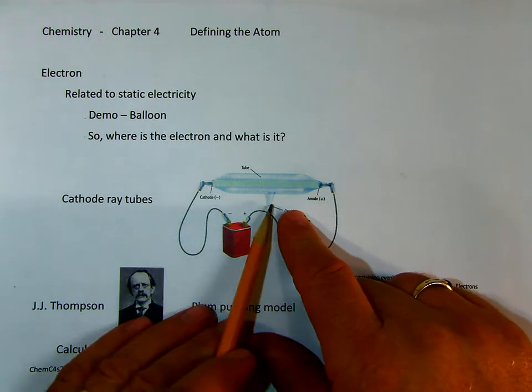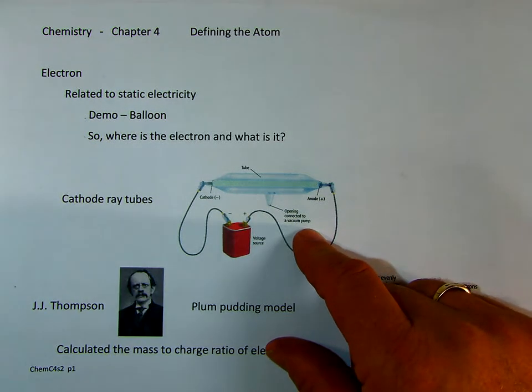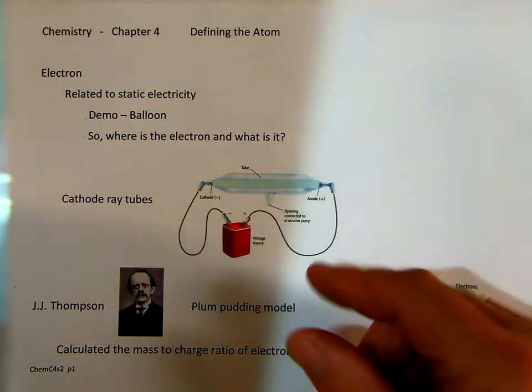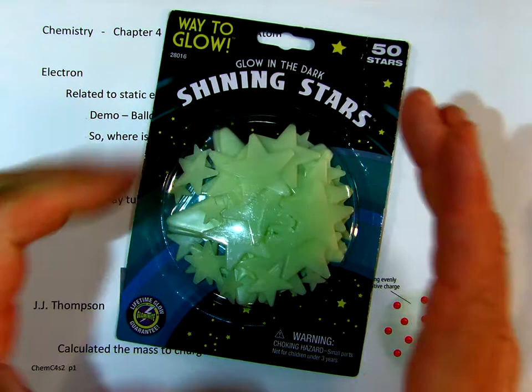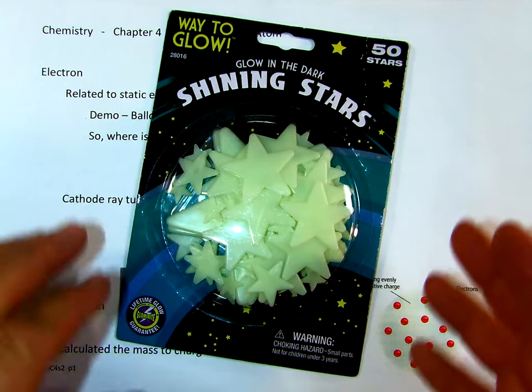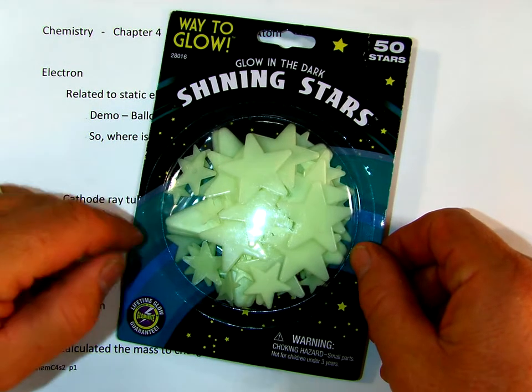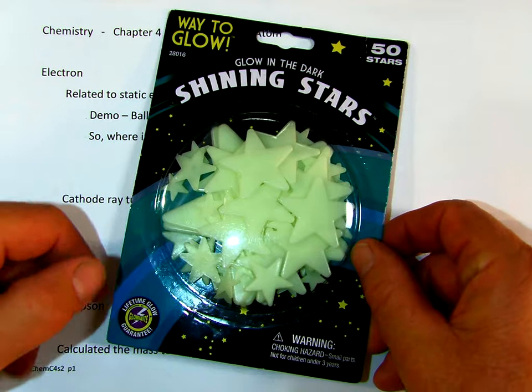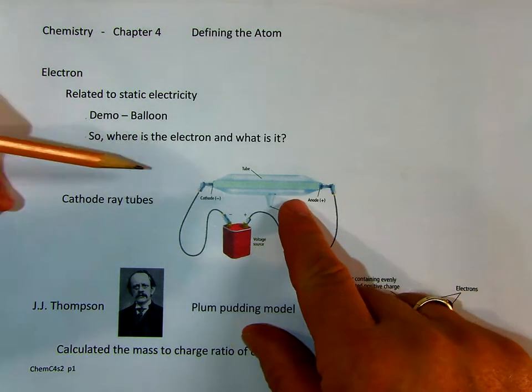A cathode ray tube is nothing more than a glass tube that's been evacuated, and it has a zinc sulfide screen inside it. If you've ever seen these little guys, and I just put it up above and charged them for just a second, these shining stars are actually plastic with zinc sulfide inside them. So when you put them against the light, they will shine for a little while as the zinc sulfide gives off the energy. That's what we have on the inside of this cathode ray tube.